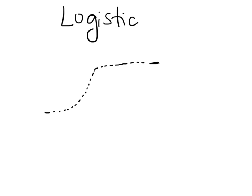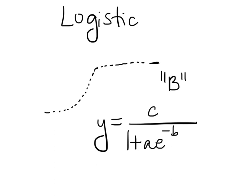If you're using the calculator, it actually just says logistic. This is option number B. The form of this one's kind of crazy. You get Y equals C over 1 plus A, E to the negative BX.